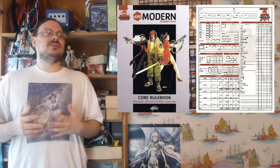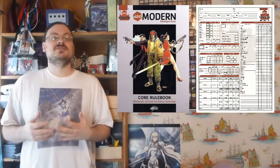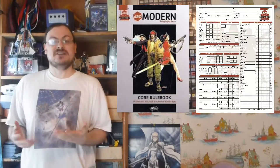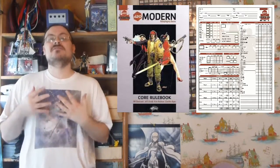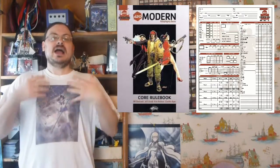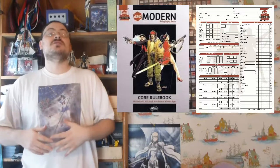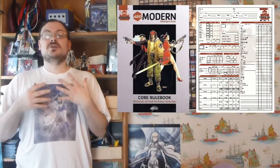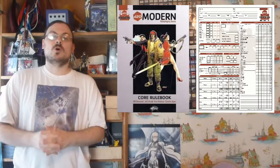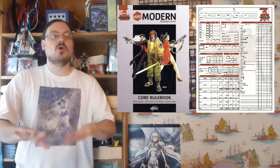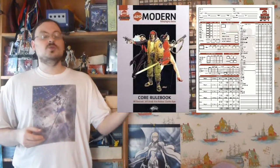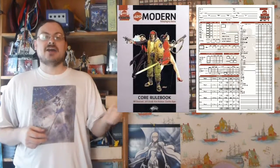One of the major things I did want to mention that's different about this system is action points. That's the first one I did want to mention, because they talk about it very early on in the book. Action points are something you can use for a variety of things. The main one you're going to use it for is after you roll a D20 roll, before your DM says you failed or succeeded, you can roll a D6 by spending an action point and add it to that roll.